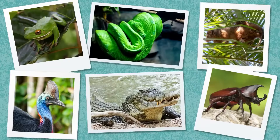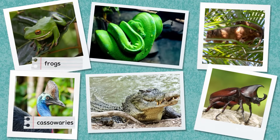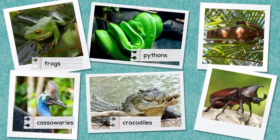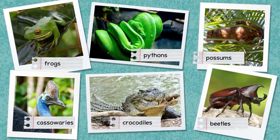Animals such as cassowaries, frogs, pythons, crocodiles, beetles, and Australian possums can be found living here.